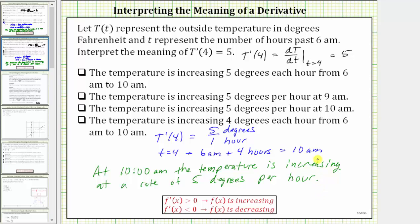And now let's look at our choices. The first choice is the temperature is increasing five degrees each hour from 6 a.m. to 10 a.m. This is not correct because the rate of change of five degrees per hour is only true at exactly 10 a.m.